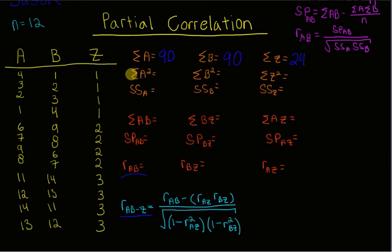Next step is to calculate the sum of A squared. So you're going to square each value and then add them up. So 16 plus 9 plus 4 plus 1 plus 36 and so on is going to give us a total of 890. Doing that for all the B values, for sum of B squared, we're also going to get 890. And then sum of Z squared, you're going to square each of these values and add them all up, just like we did previously. And you're going to get a total of 56.